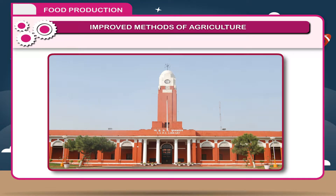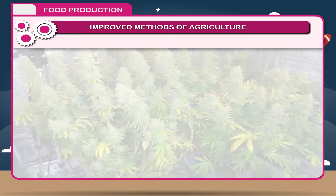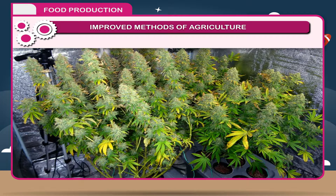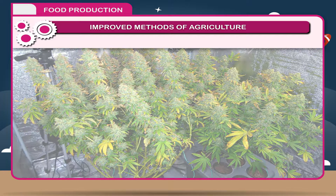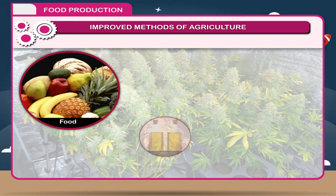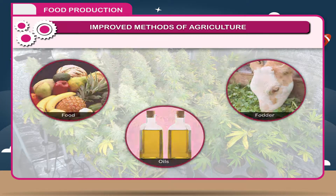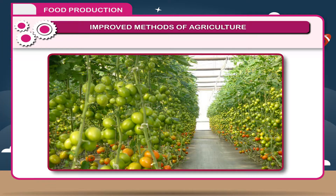The main objectives of these are: 1. To increase the yield of desired products such as food, oils, fodder, etc. 2.